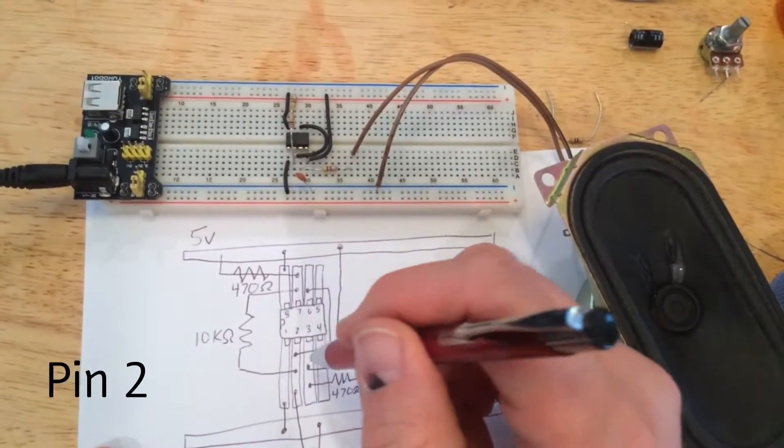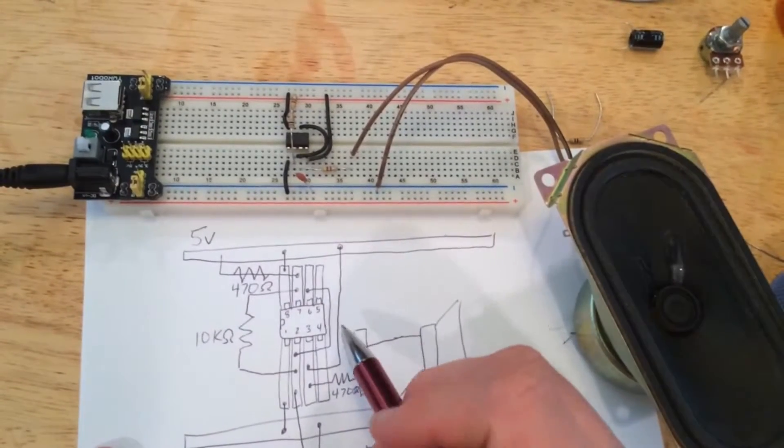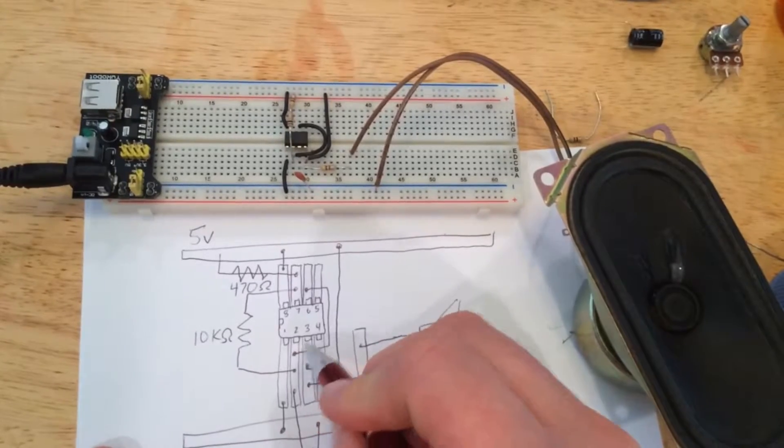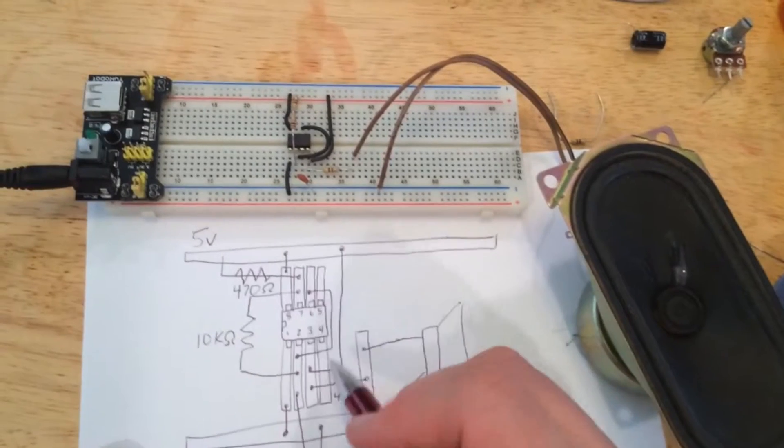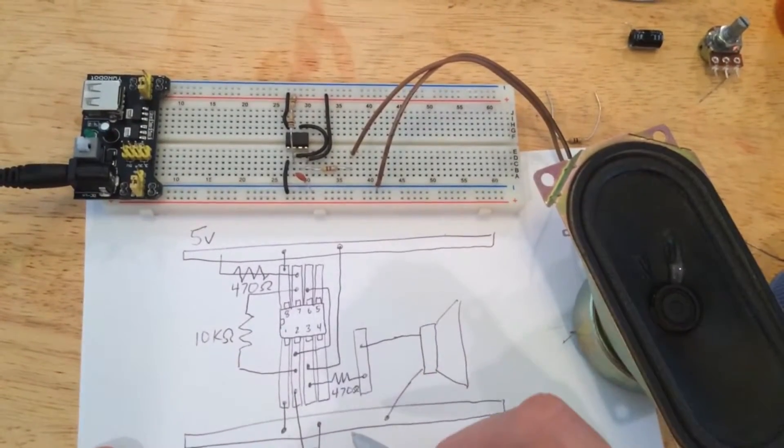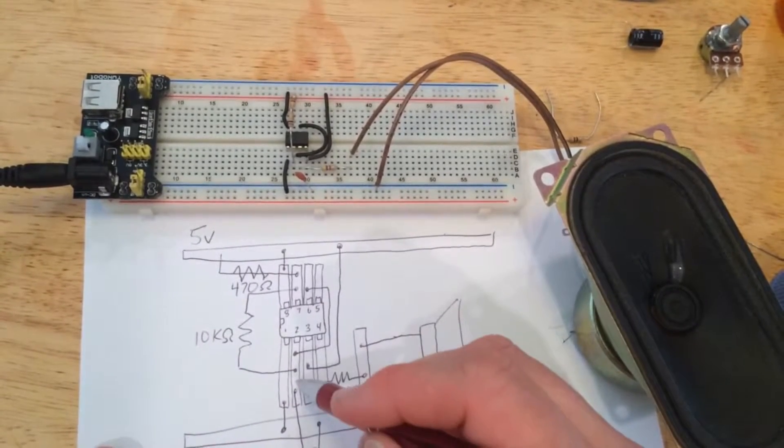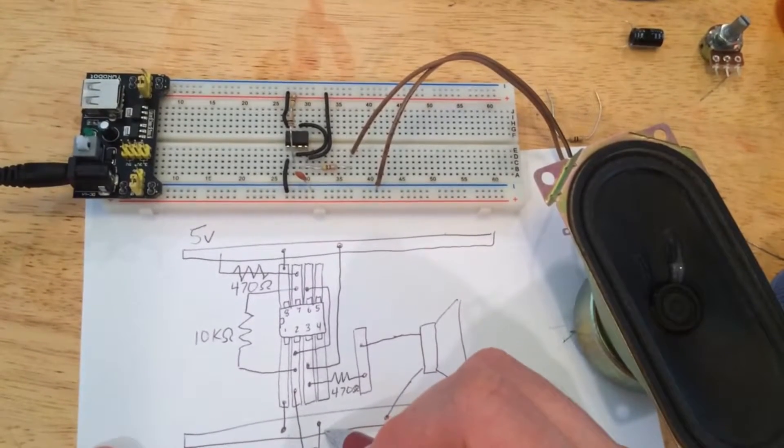You want to connect pin 2 to pin 6 without any kind of component. You want to connect power supply to pin 3. Your capacitor is connecting pin 2 to ground. Then pin 3, you have a resistor connecting it to the speaker.